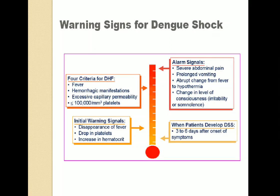Here is a quick review of all the warning signs of dengue, starting from the bottom. When a patient develops DSS, it occurs 3 to 6 days after onset of symptoms. Initial warning signs include disappearance of fever, drop in platelets, and increase in hematocrit. Then the four criteria for DHF: fever, hemorrhagic manifestation, excessive capillary permeability, and platelet count less than 100,000 per cubic millimeter. Finally, alarming signs: severe abdominal pain, prolonged vomiting, abrupt change from fever to hypothermia, and change in level of consciousness.